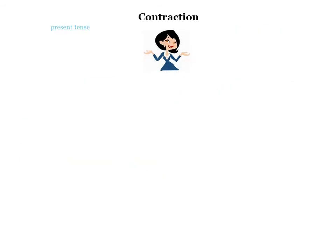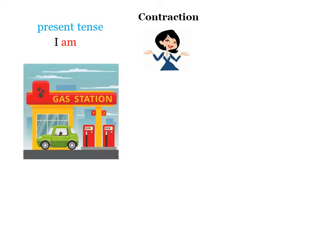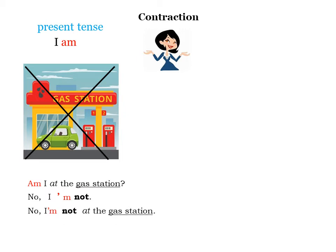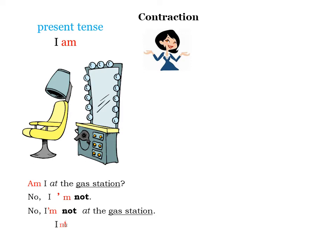Contraction. Present tense: I am. Am I at the gas station? No, I am not. To make a contraction, we change the A to an apostrophe: No, I'm not. In a sentence: No, I'm not at the gas station. I'm at the hair salon.